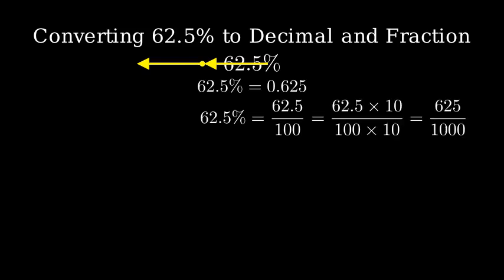To eliminate the decimal in the numerator, we can multiply both the numerator and denominator by 10. This gives us 625 over 1000.